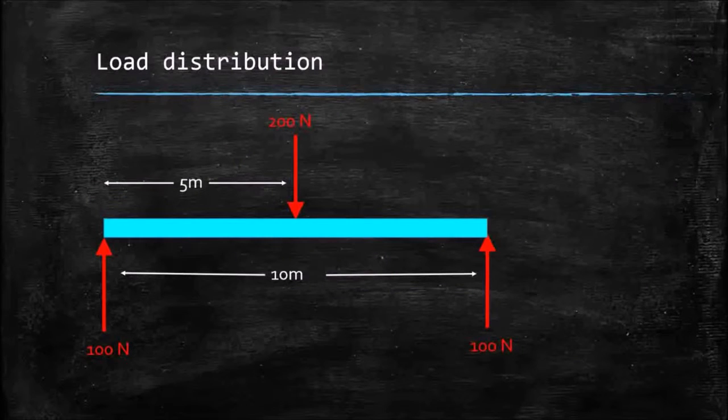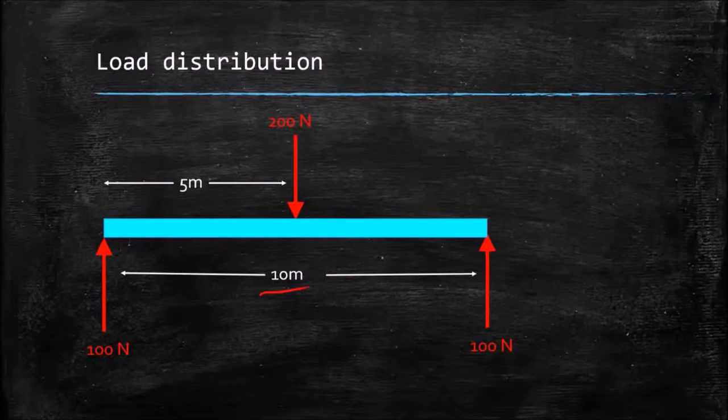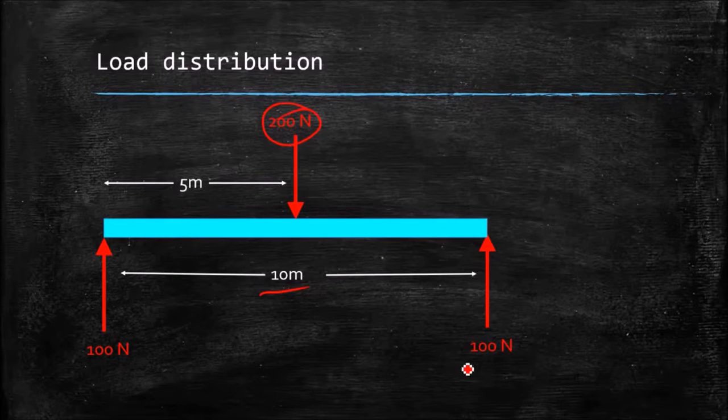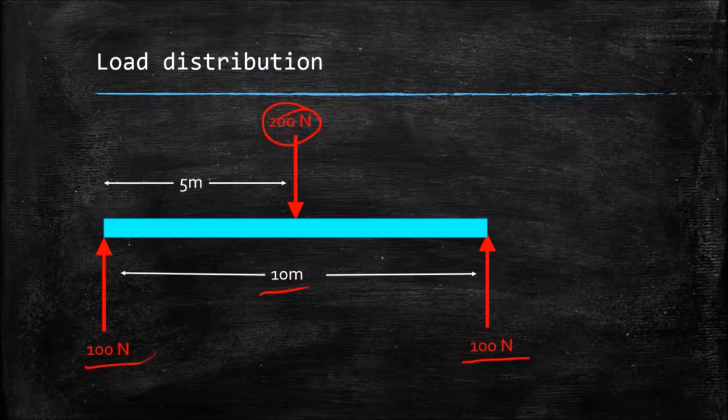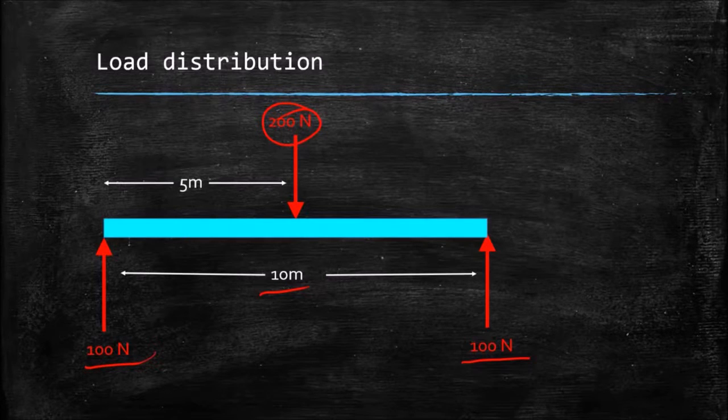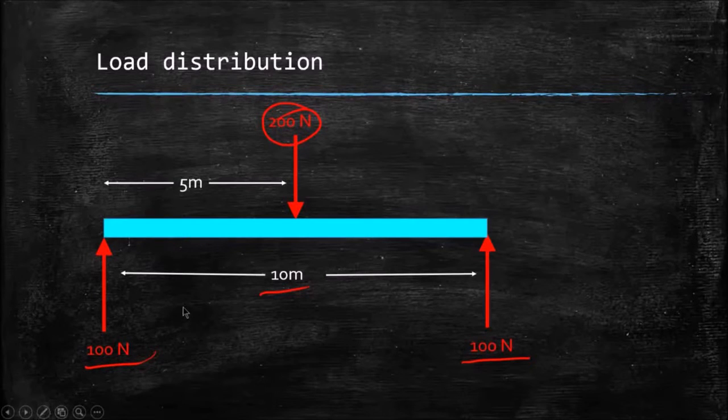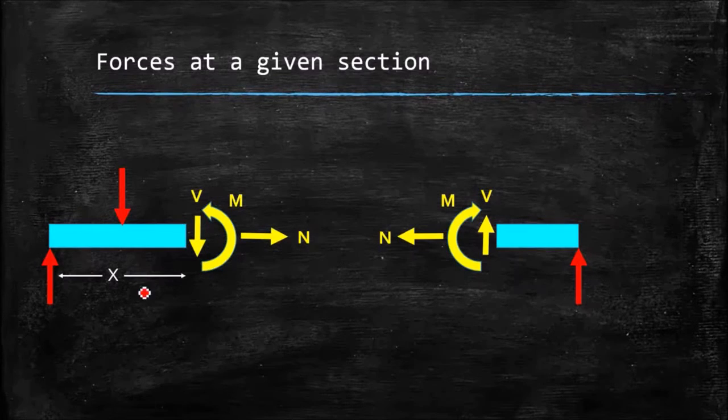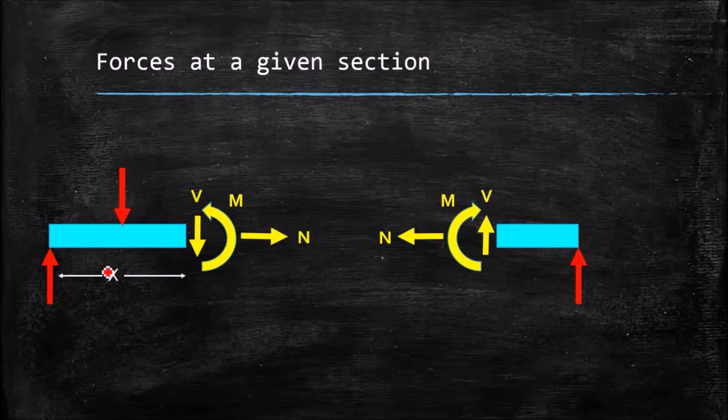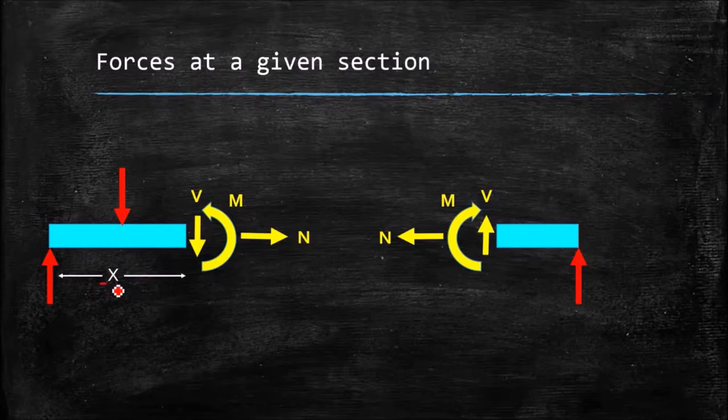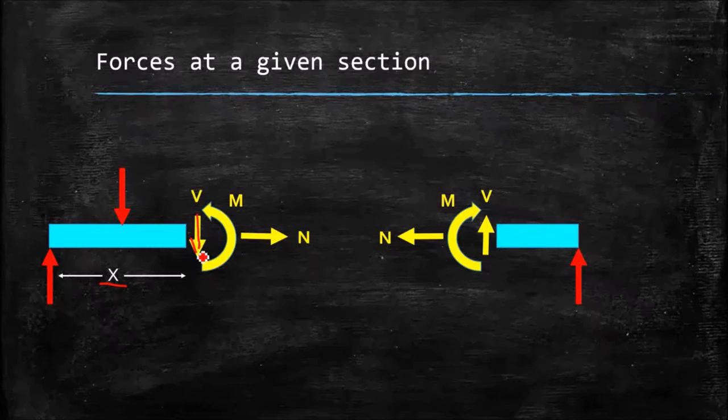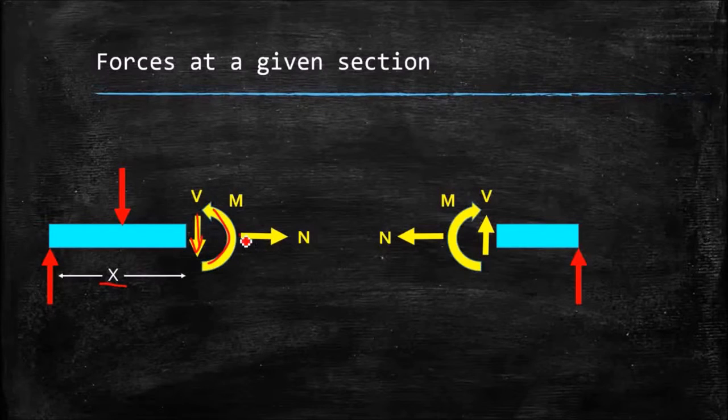So here's our beam, it's 10 meters long, we've got a 200 newton force applied in the center, and by inspection we can see that we have 100 newton reaction forces at each end. If I cut that into sections, I can take a piece of that beam, and I've cut it at some distance x, and I want to be able to determine the forces at that section, the shear, the moment, and the normal.